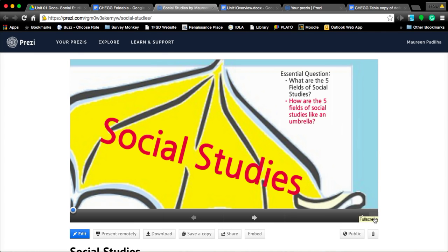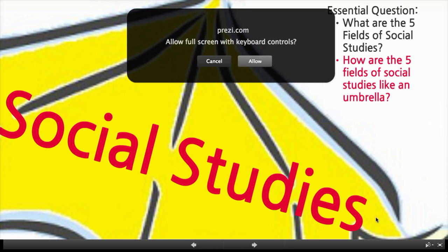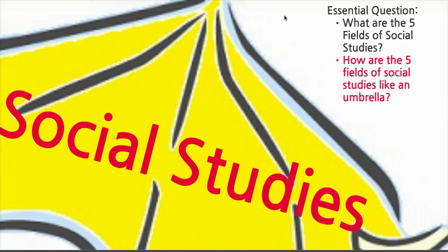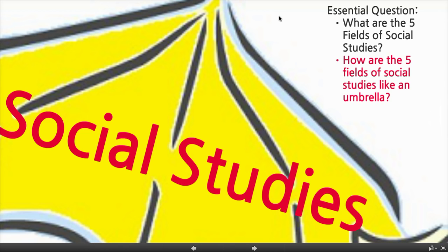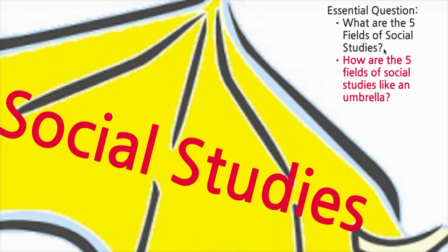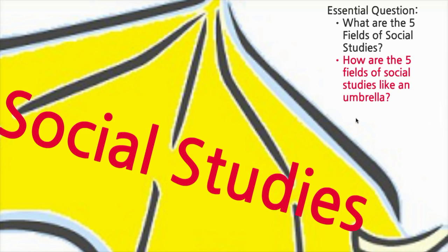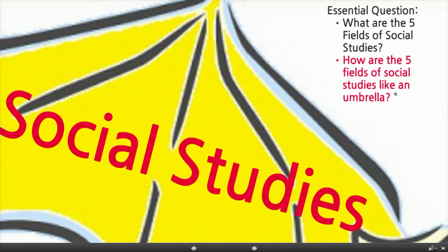Welcome. Today we are going to learn about the five fields of social studies. You are also going to create a foldable and have it in your book. The foldable will become useful when you're reviewing for your tests and quizzes as well as class discussions. Your essential question is: what are the five fields of social studies? And also, how are the five fields of social studies like an umbrella? You'll understand both of these questions by the end of the presentation.